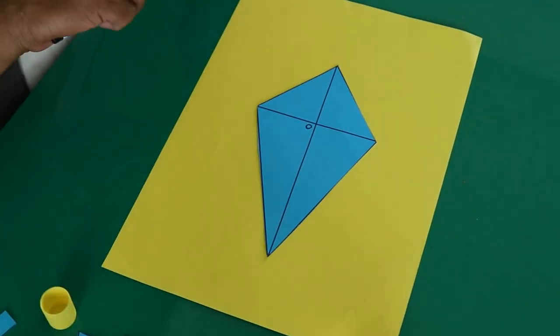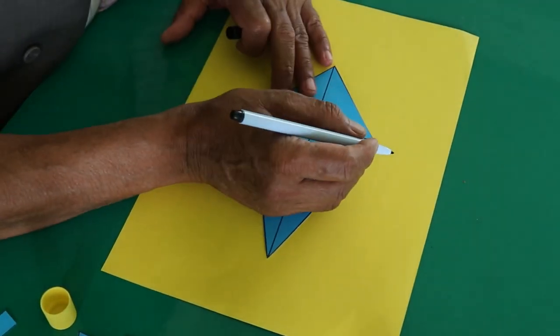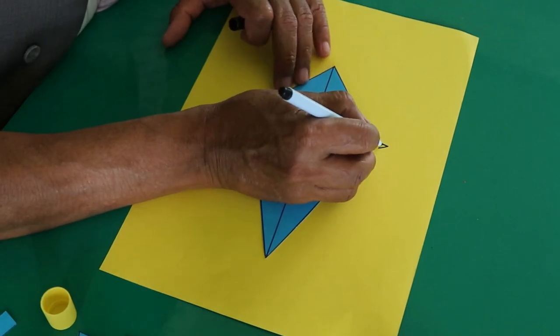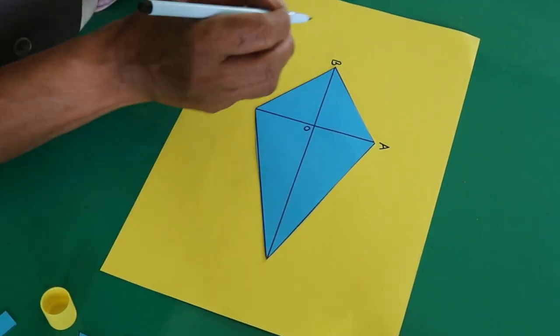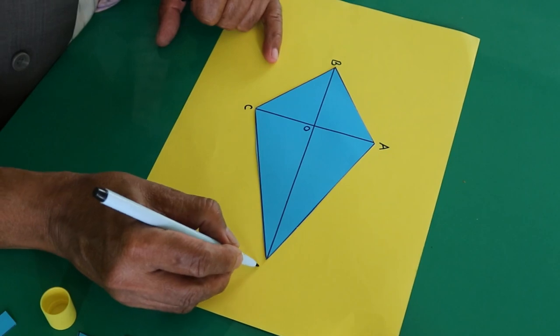Once you have pasted this, name it as before. You write A, B, C, D, it's like that.